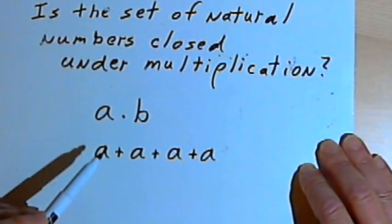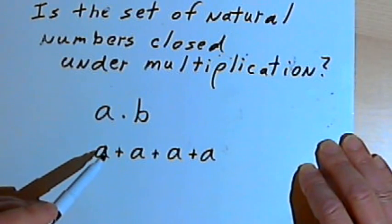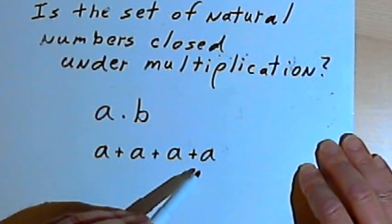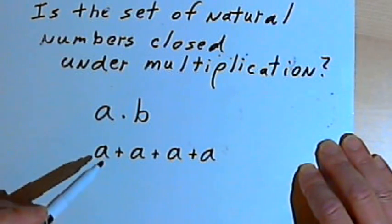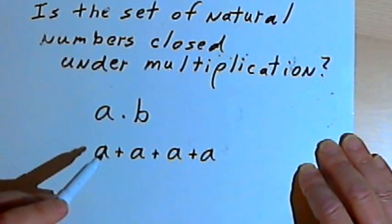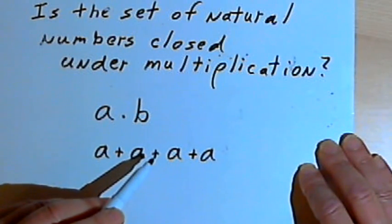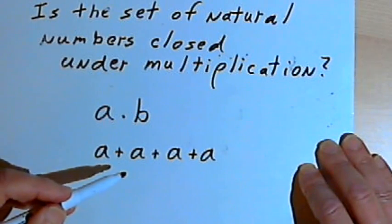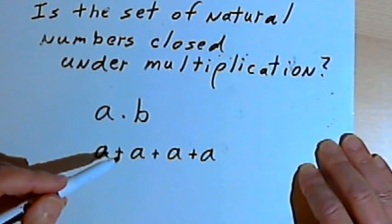Well, since the set of natural numbers is closed under addition, and multiplication is really nothing more than repeated addition, then the set of natural numbers would also be closed under multiplication.